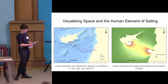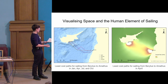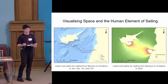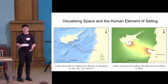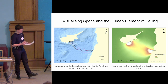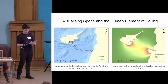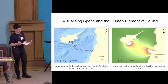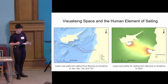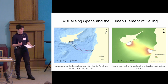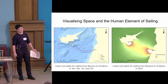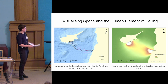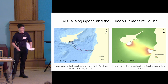Whereas least cost paths encourage the interpretation that mariners would have had only one route based on the perfect environmental scenario, current maps leave more room for adaptability, change, and human choice within those environmental restrictions. Therefore, they model more of the social, economic, and cultural elements of seafaring than least cost paths, and there is much more to be said for the human element of sailing.